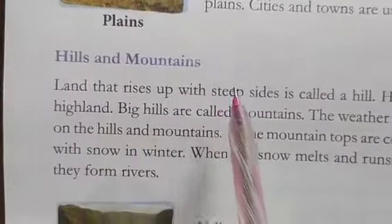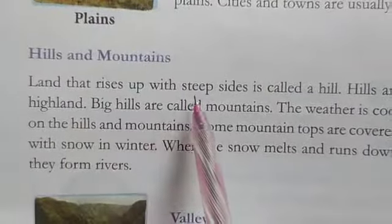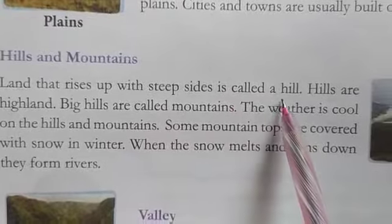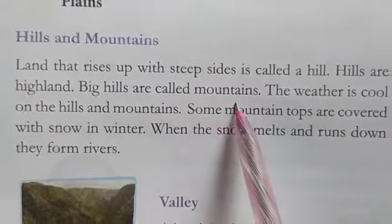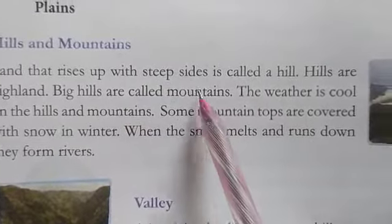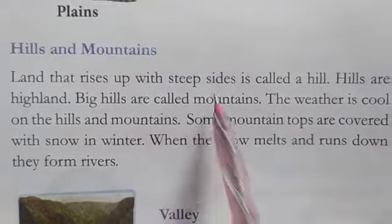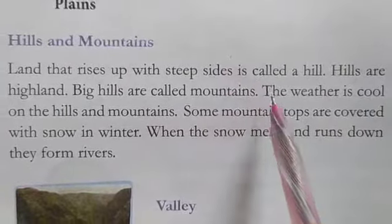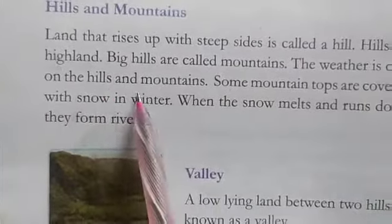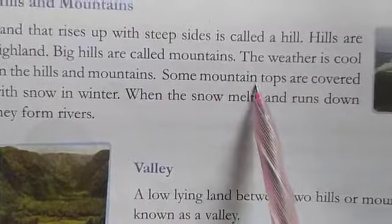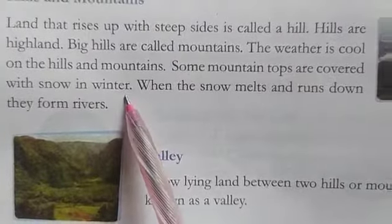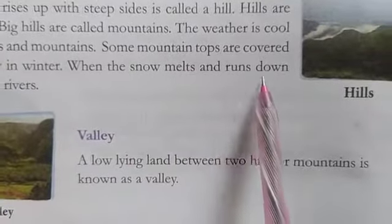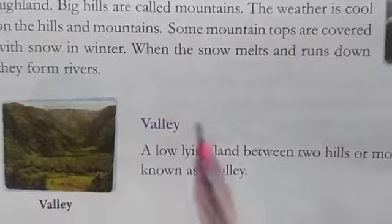Hills and mountains. Land that rises up with steep sides is called a hill. Hills are high land. Big hills are called mountains. The weather is cool on the hills and mountains. Some mountain tops are covered with snow in winter. When the snow melts and runs down, they form rivers.